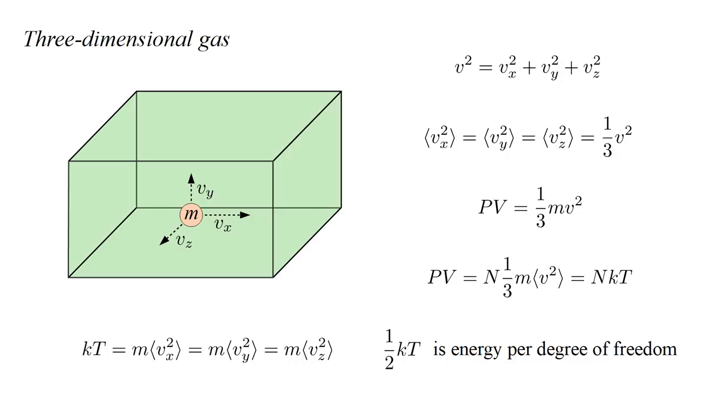Also, KT equals molecular mass times mean square velocity in a single dimension, so that one-half KT is the kinetic energy per, quote, degree of freedom.